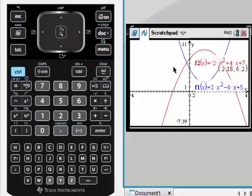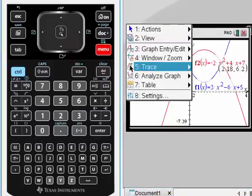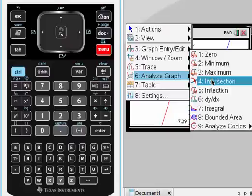Now, let me show you the second one. Again, you have to go to menu. It does it one point at a time. Go to analyze graph, intersection.